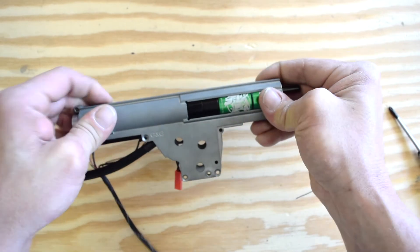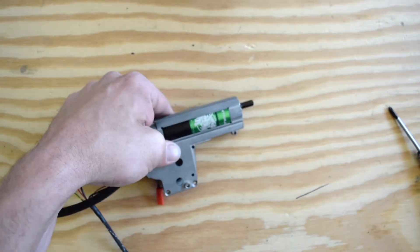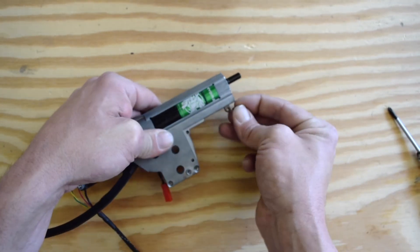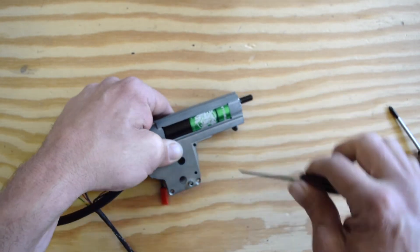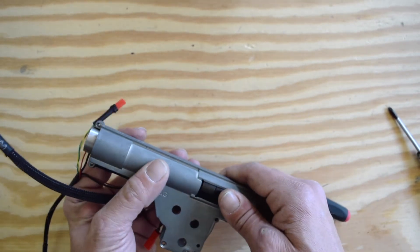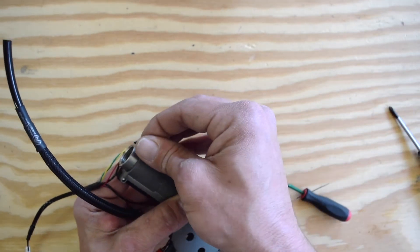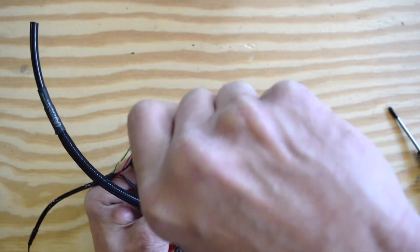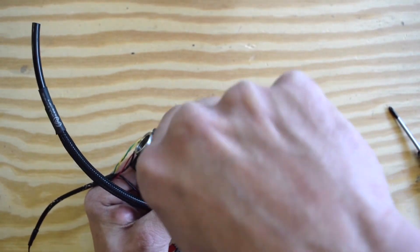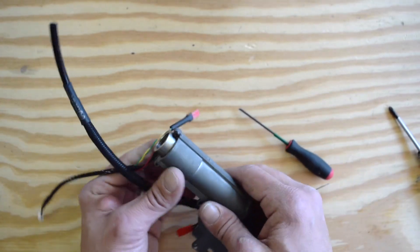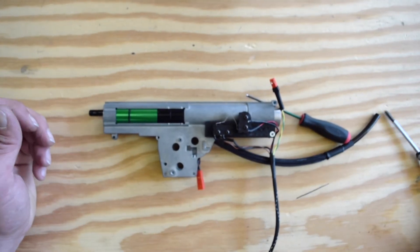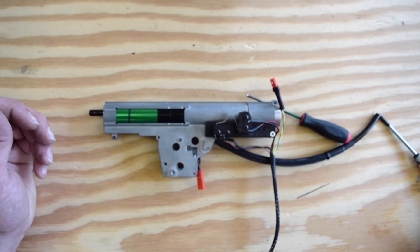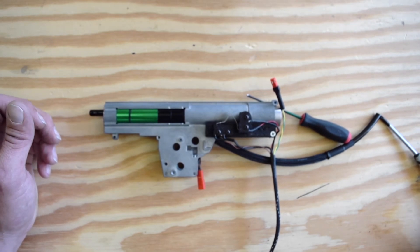Just like so. And snug it down as well. Now we have completely installed the Hydra Gen 2 into the F2000 gearbox along with the electronics.